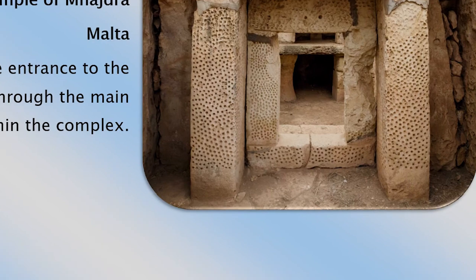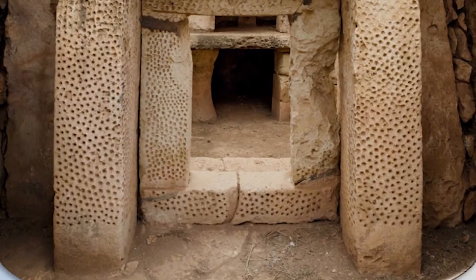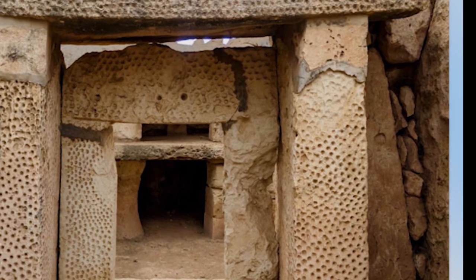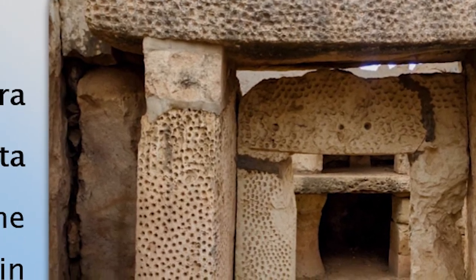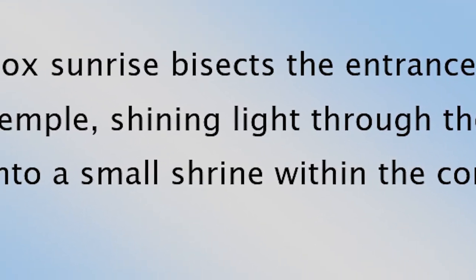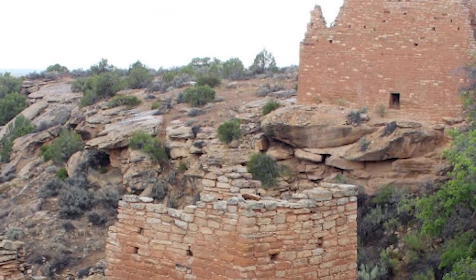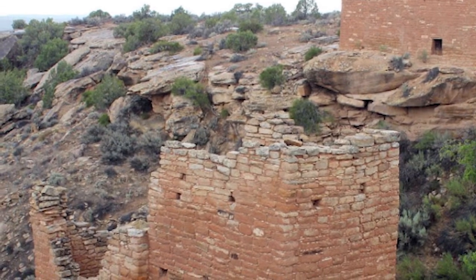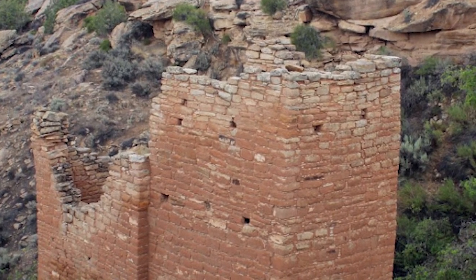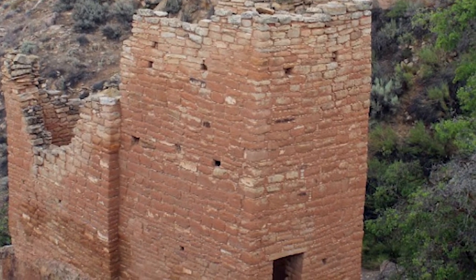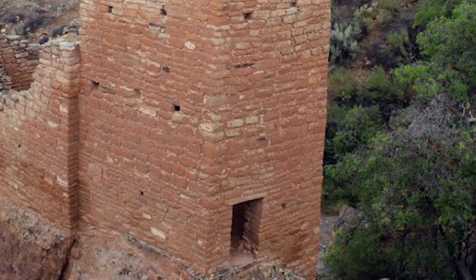The Temple of Mnajdra in Malta: the spring equinox sunrise bisects the entrance to the lower temple, shining light through the main passageway and into a small shrine within the complex. Hovenweep Castle at the Colorado-Utah border uses small ports to track the movement of the sun, a method still used by the Pueblo people today. The equinox port at Hovenweep Castle points to the sunrise azimuth four days after the vernal equinox. Those little holes on the structure shine the sun at certain points, and the light comes in through those holes and shines directly at certain spots at the right time for the equinoxes. Different cultures around the world found different ways to keep time with the sun.